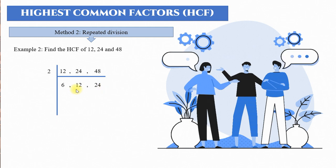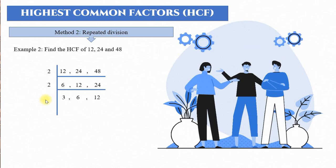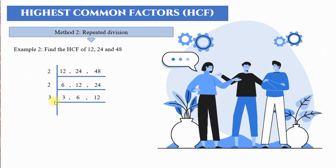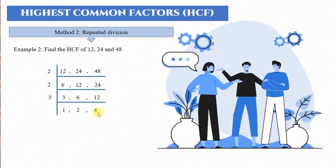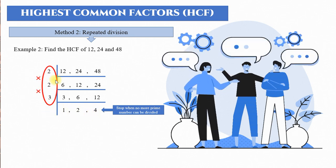Now which prime can divide these? All three — 6, 12, 24 — can divide by 2. So: 6 divided by 2 equals 3, 12 divided by 2 equals 6, 24 divided by 2 equals 12. Next, 3 cannot divide by 2, but 3, 6, and 12 can all divide by 3. So: 3 divided by 3 equals 1, 6 divided by 3 equals 2, 12 divided by 3 equals 4. No more prime number can divide all remaining values, so we stop. Our HCF is 2 times 2 times 3, which equals 12.